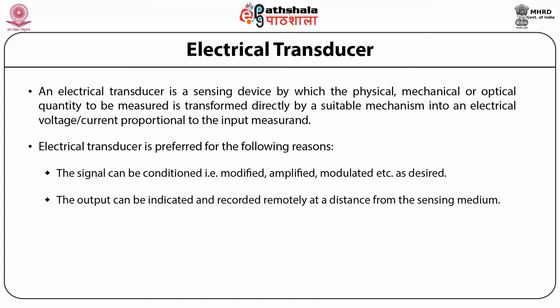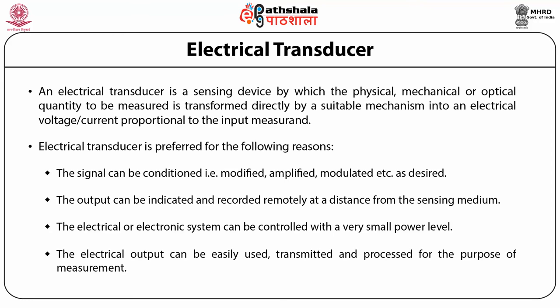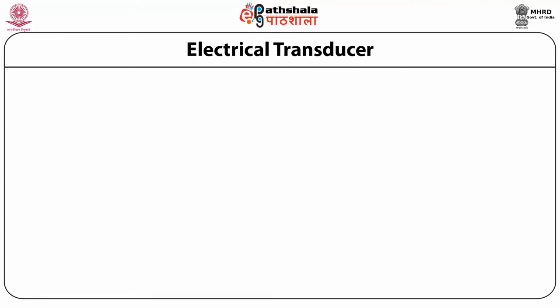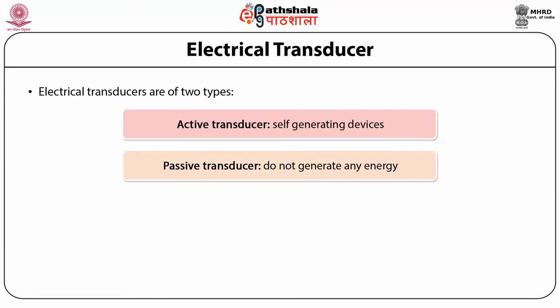The output can be indicated and recorded remotely at a distance from the sensing medium. The electrical or electronic system can be controlled with a very small power level. The electrical output can be easily used, transmitted and processed for the purpose of measurement. Electrical transducers are of two types: first, the active transducer which is a self-generating device, and second, the passive transducer which does not generate any energy.